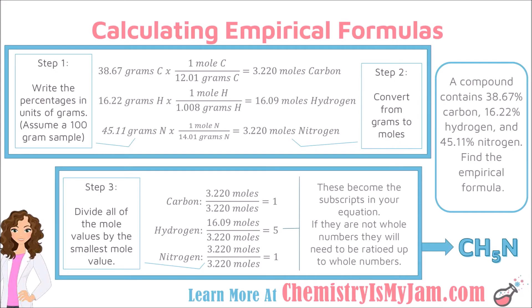Step 2 is to convert from grams to moles. Take each number of grams and divide it by the molar mass from the periodic table to find the number of moles for each atom. I have converted to moles for carbon, hydrogen, and nitrogen by dividing by their respective molar masses from the periodic table.